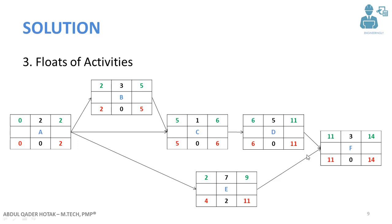Now let's calculate the float of each activity. The formula is: float equals late finish minus early finish, or late start minus early start. For activities A, B, C, D, and F, the float is 0. Only for activity E does the late finish minus early finish equal 2, so its float is 2. This means you can delay activity E by two days without delaying the project or its successor activity, which is activity F.